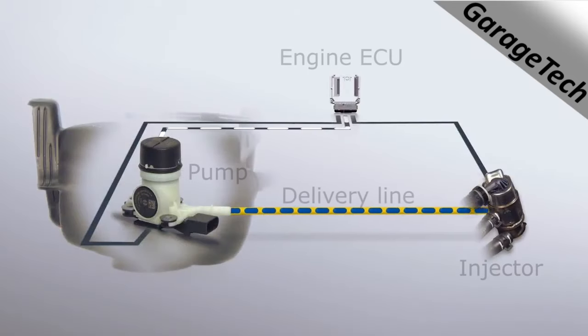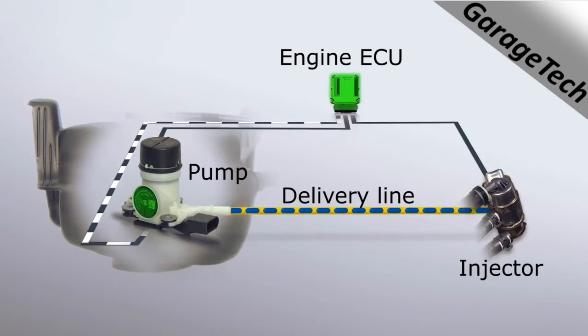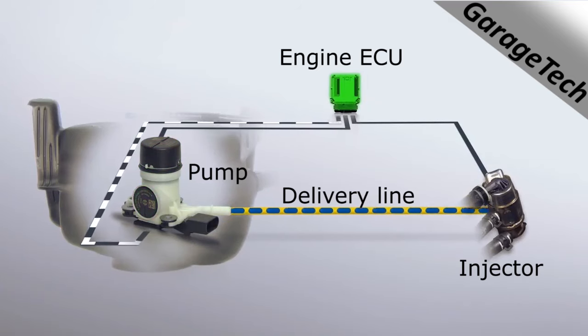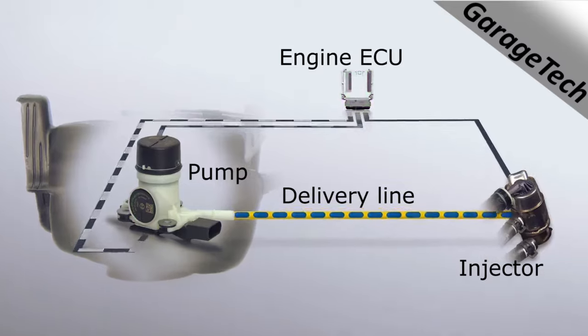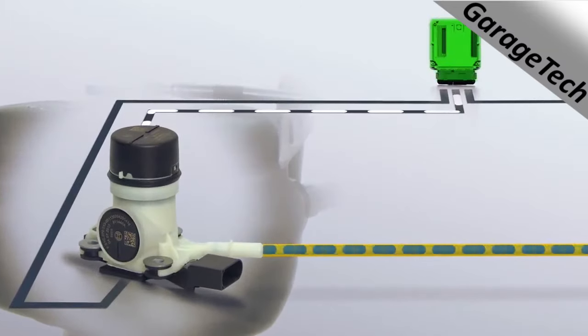The engine control unit controls both pumps and monitors the system pressure. This is done by monitoring the pump's power consumption. The pressure inside the line is approximately 5 bar.